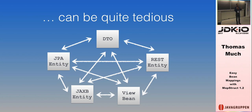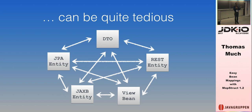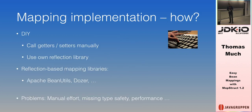That was just one bidirectional mapping between Customer and CustomerDTO, but what if I also want to map to a JSON entity or a REST entity? All those mappings can become quite tedious if I have to write the mapping code myself by hand.